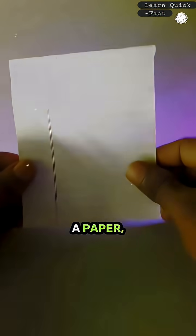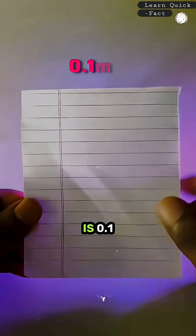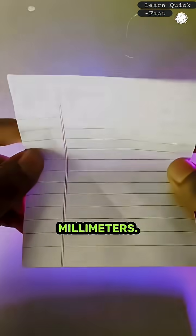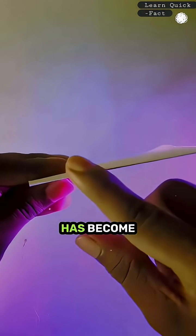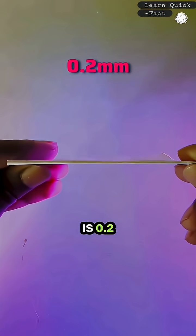This is a paper, and let's assume that its thickness is 0.1 millimeters. Let's fold it once. Its thickness has become double, that is 0.2 millimeters.